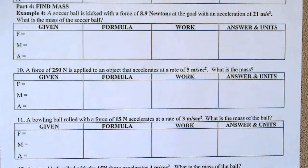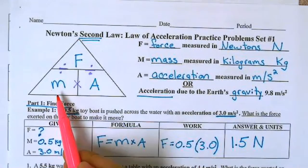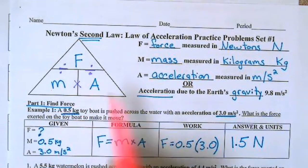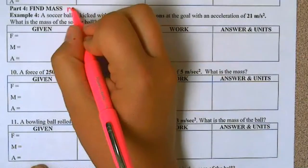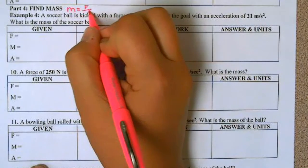All right, for part four, we are finding the mass. So if we come back to our math triangle, when we're looking for mass, we're going to do force divided by acceleration. So for all of part four, mass is going to be force divided by acceleration.